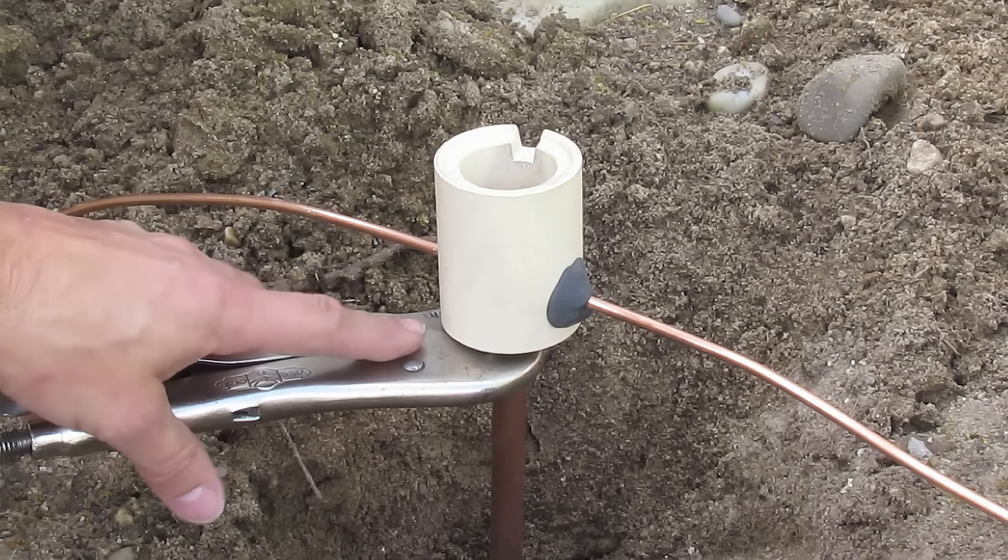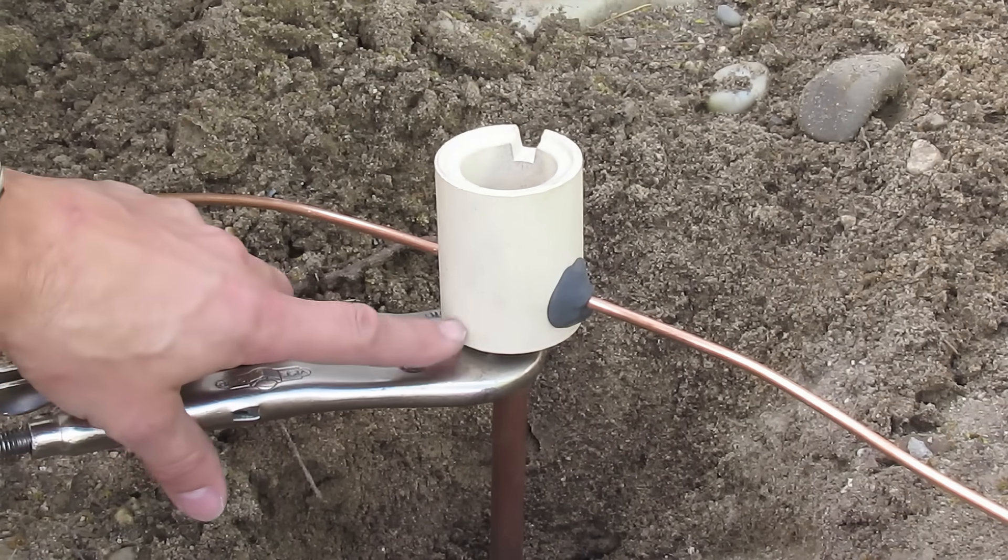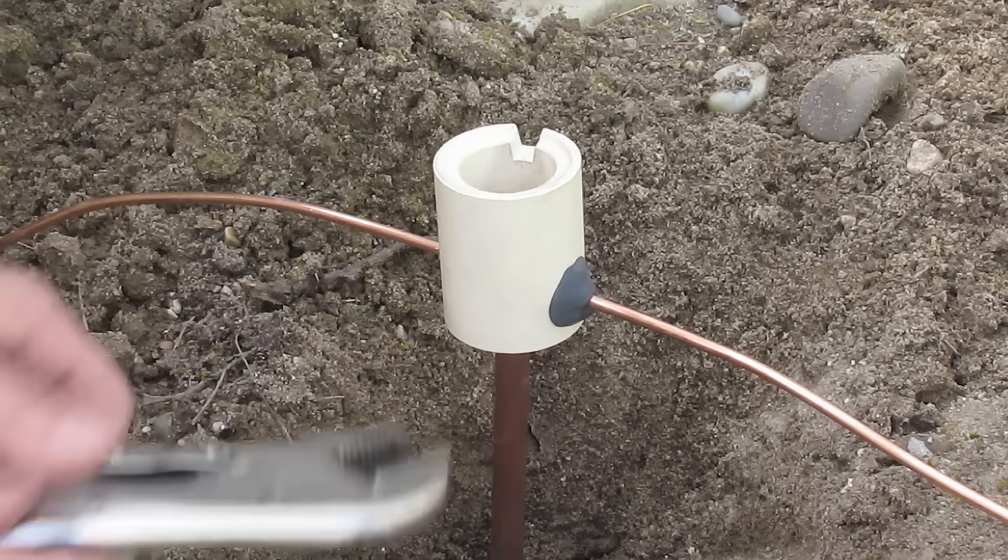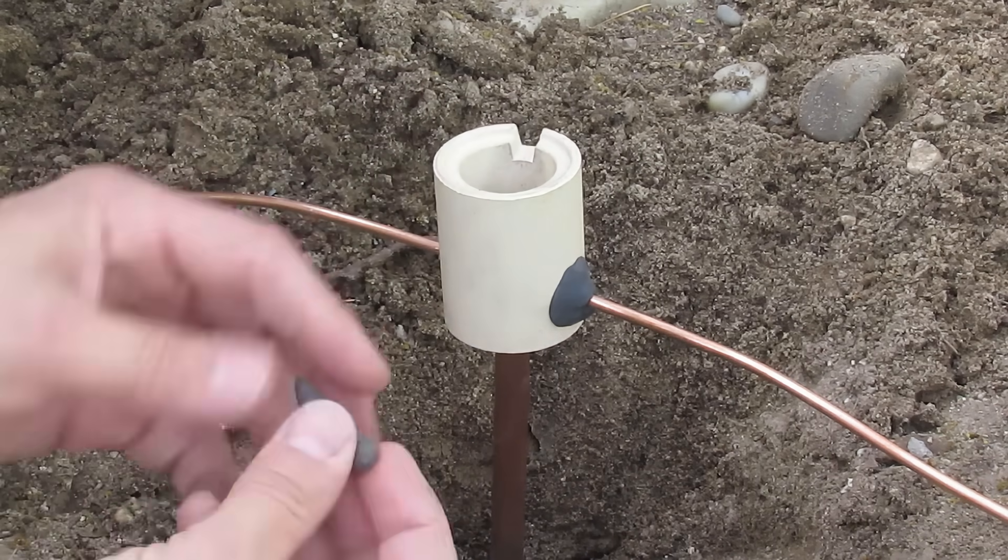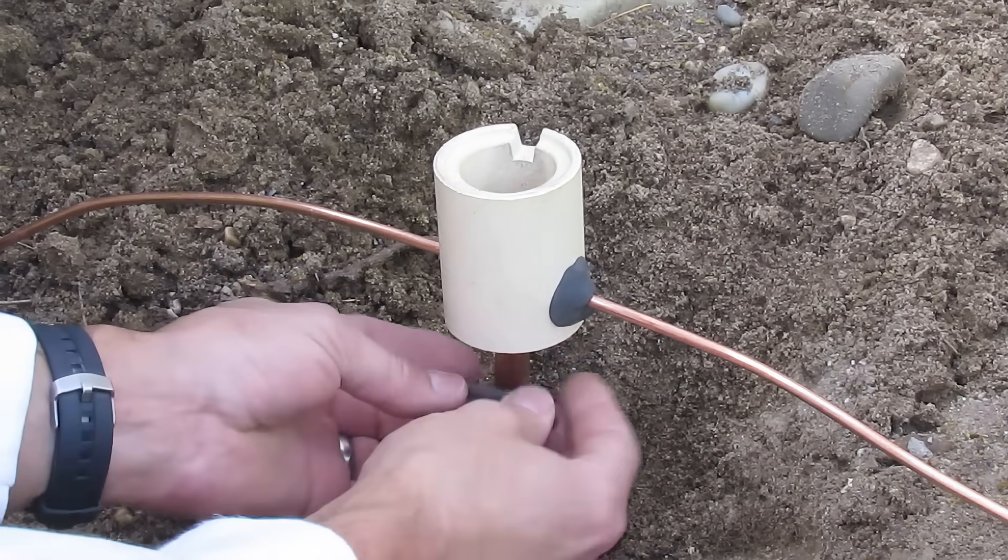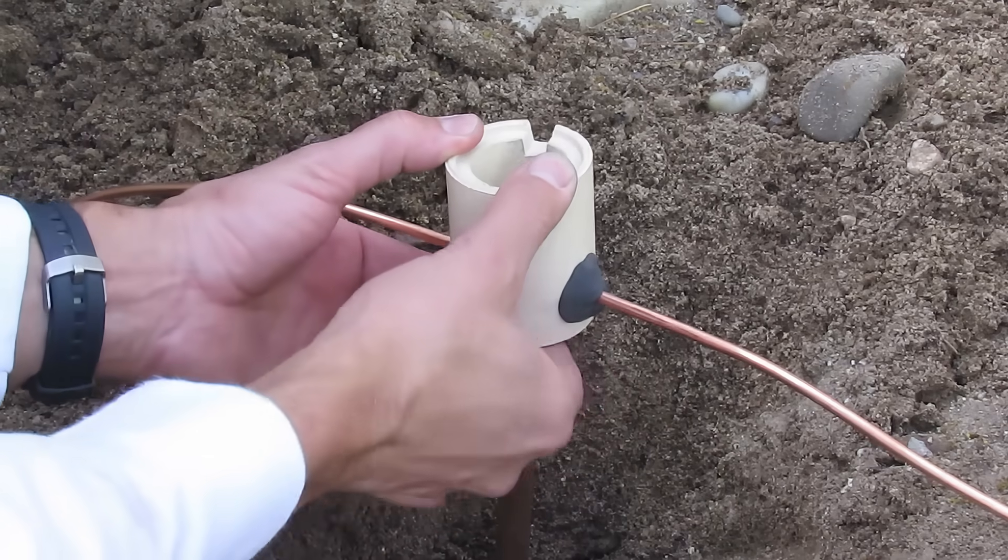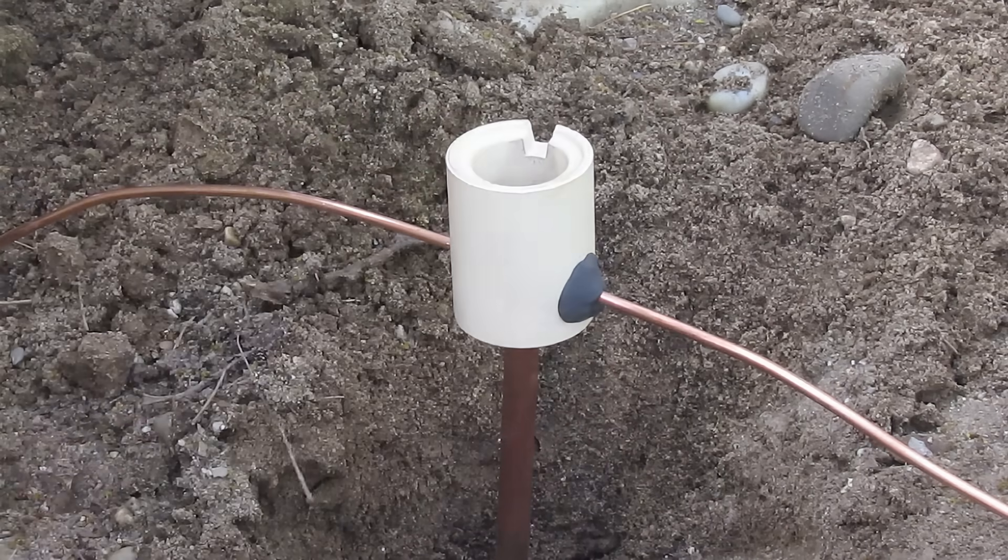The instructions say to use a vice grip underneath the bottom of the crucible to help support it. And I'm going to take that off and just use some of this mold sealer and put it around the bottom as well. So we're all sealed up and ready to go.